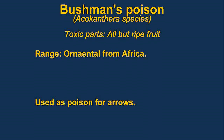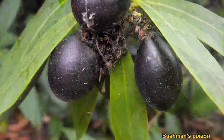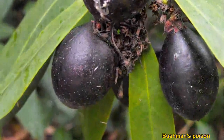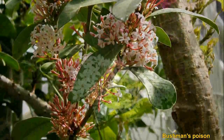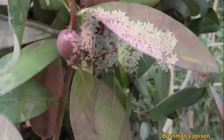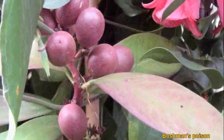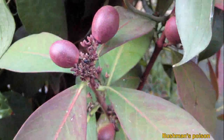Bushman's poison is a shrub that was used as a source for arrow poison. All plants of the genus contain toxins strong enough to cause death. They are native to South Africa. Other names of the plant are arrow poison plant or tree. The ripe fruits are edible, but they are bitter.